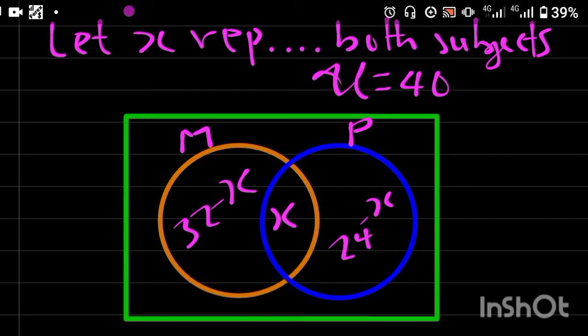Why is it 32 minus X? Because the total number of students that offer mathematics is actually 32. And among these 32, the number of students that offer both mathematics and physics, they are already there.